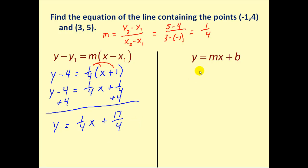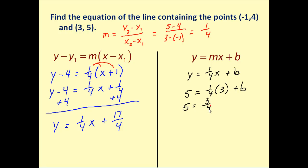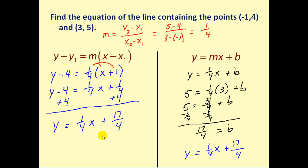Now using slope-intercept form with m equals one-fourth, we choose the second point (3, 5) to find b. Substituting gives five equals one-fourth times three plus b, so five equals three-fourths plus b. Subtracting three-fourths from both sides gives b equals five minus three-fourths, which is one and one-fourth, or seventeen-fourths. Replacing b with seventeen-fourths gives the same equation as before.